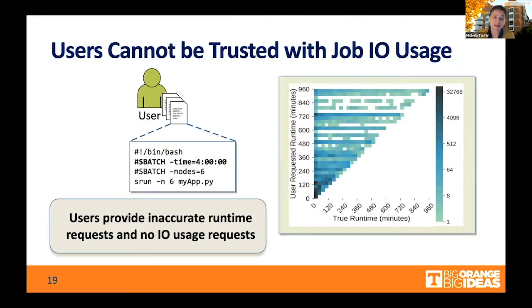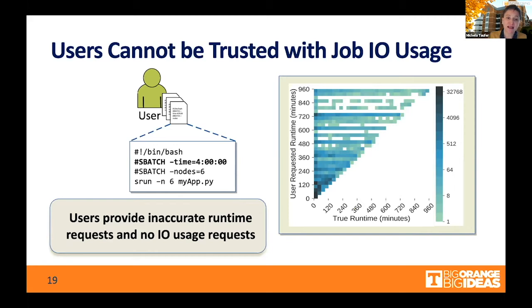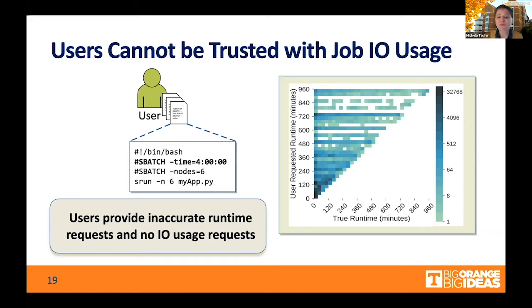Going back to our scripts, users provide some of this information, but we cannot really trust it. What we find in our scripts is a request for a total allocation time. As you can see in the left picture — from monitoring user requests and true runtimes of jobs at Lawrence Livermore National Laboratory — if there were a matching we would have a very dark diagonal, which is not the case. We cannot blame the user, because there is this tendency to overestimate time just to prevent brutal termination of jobs.